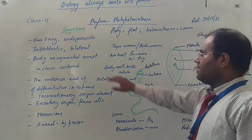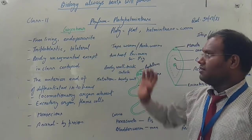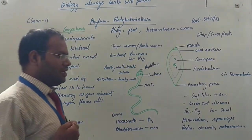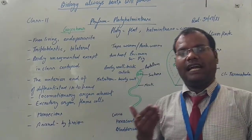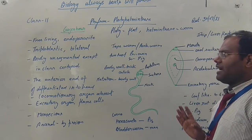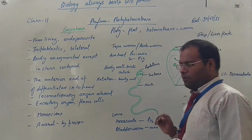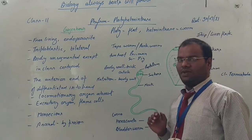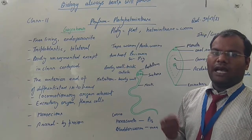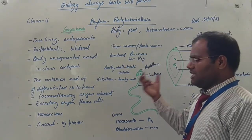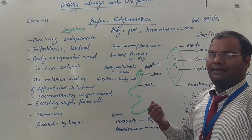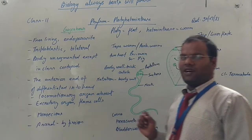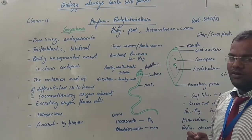The word Platyhelminthes was first coined by Gegenbaur, the scientist who first used the term Platyhelminthes. The meaning of Platyhelminthes is flat organisms — bodies with no cavities present. These organisms mainly exist as endoparasites, present inside the body. But few species are found in water and terrestrial places. For example, planaria is found in water bodies.